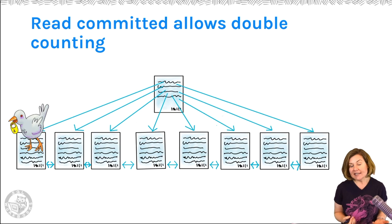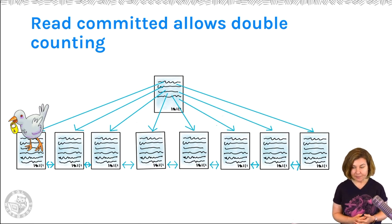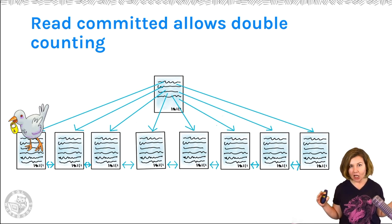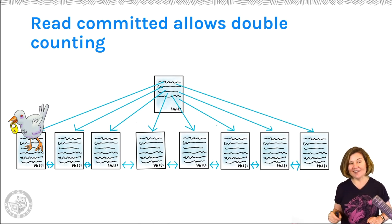So here's how read committed can return incorrect data. Read committed, one of the things that can easily happen under read committed is double counting a row. And this is because read committed holds locks for a short amount of time. For example, we have an index here. This index is on first name, and it contains a long list of first names. Since the leading index key is on the first name column, the index itself has the A's on one side of the index and the Z's on the other side of the index. It's ordered alphabetically.